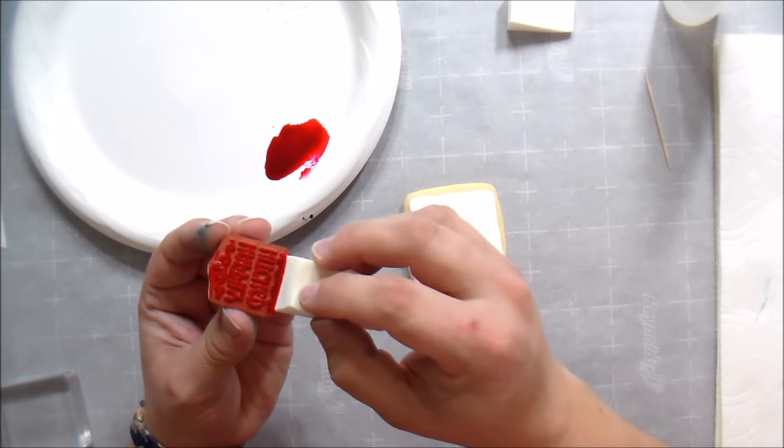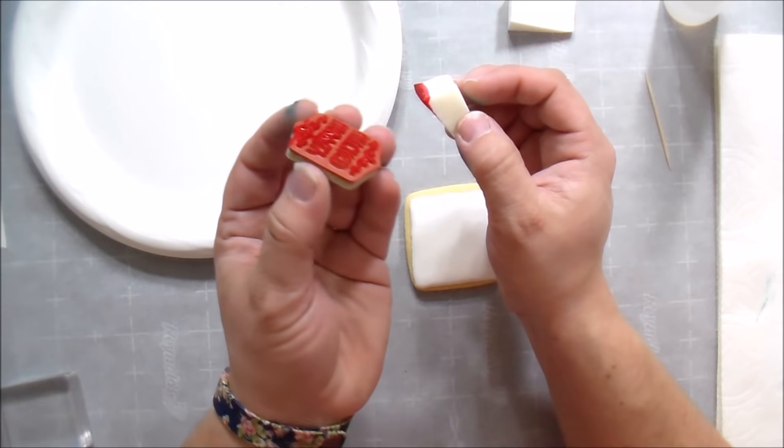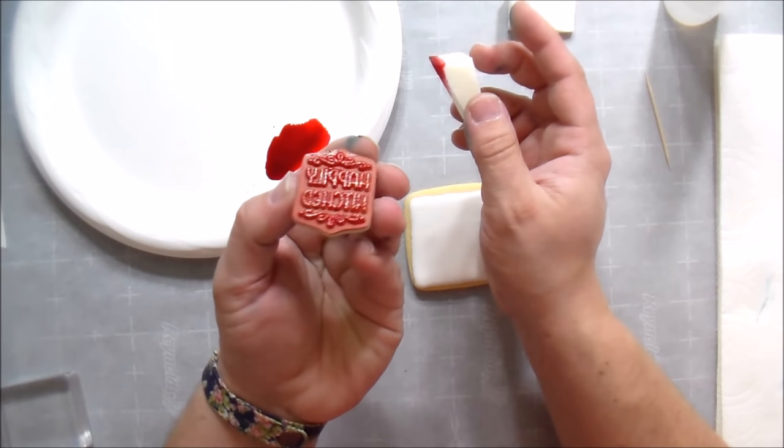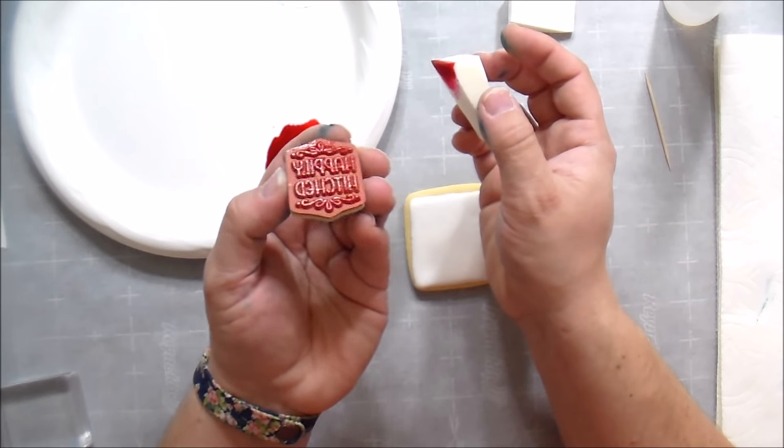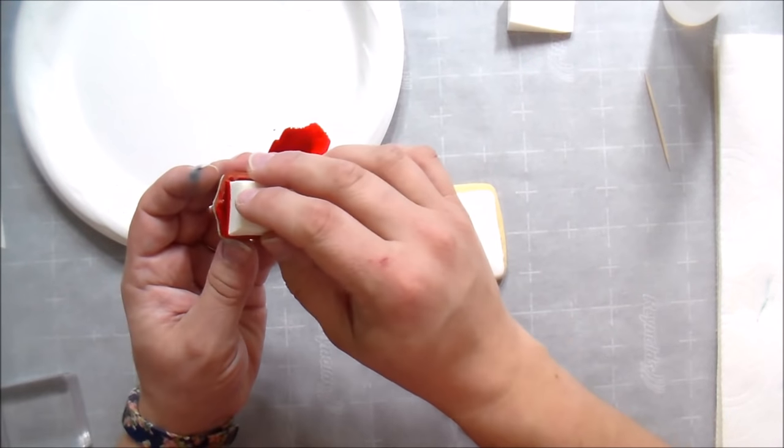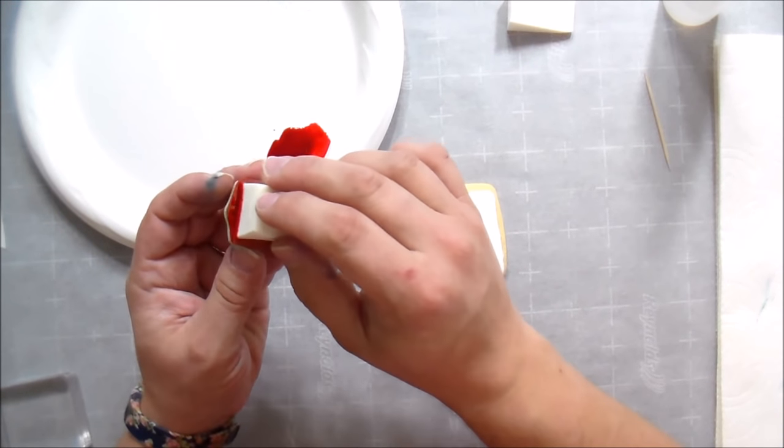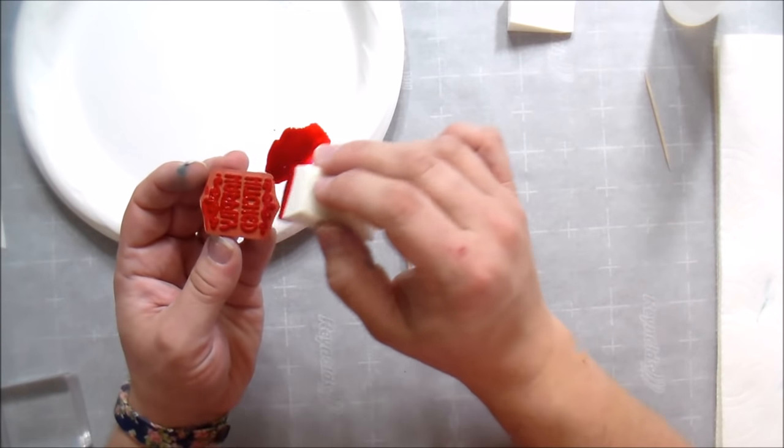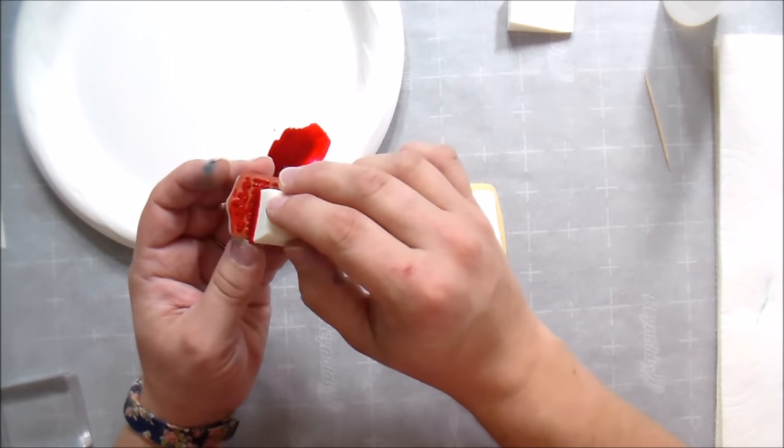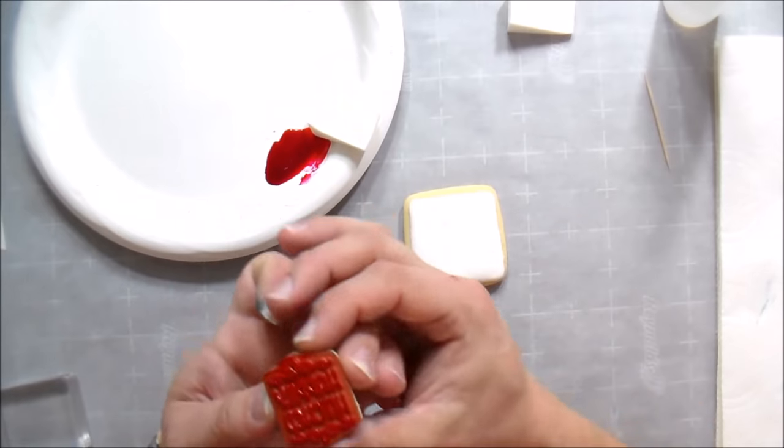Now you want to make sure that your stamp is getting even coverage on it. No big globs anywhere of food coloring. And you want to do this fairly quickly because you do want this to still be wet when you push it on your cookie.